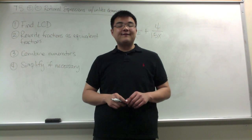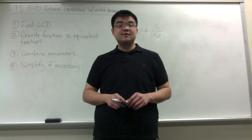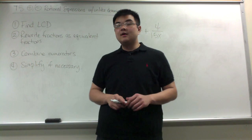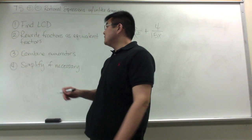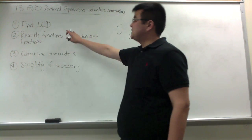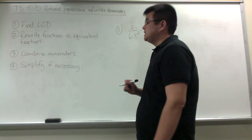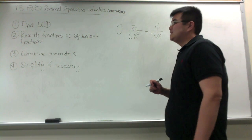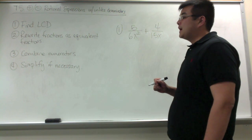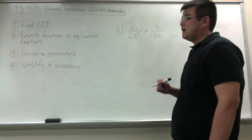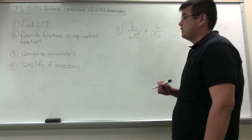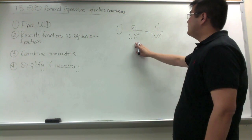These are the notes for section 7.5, adding and subtracting rational expressions with unlike denominators. We have four steps: the first one is to find the LCD, then rewrite fractions as equivalent fractions, then combine numerators, and then finally simplify if necessary.